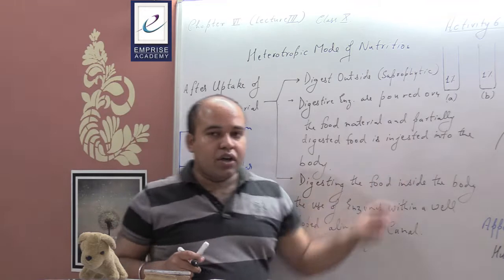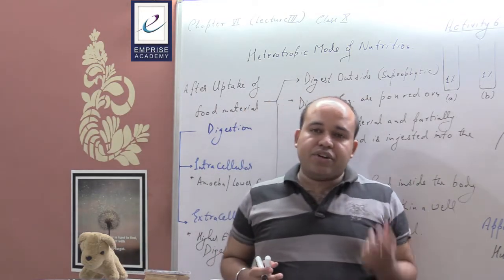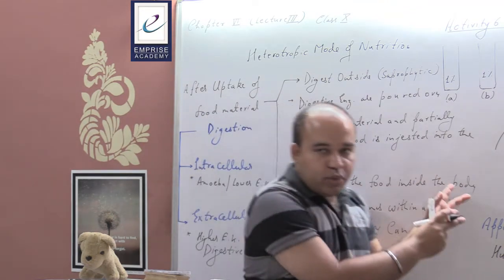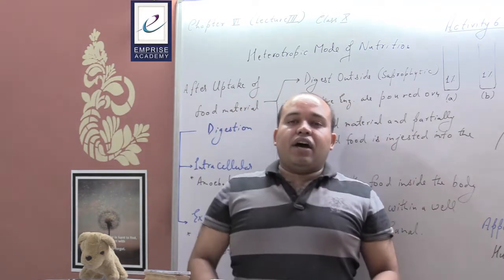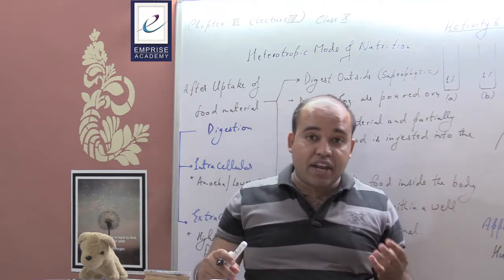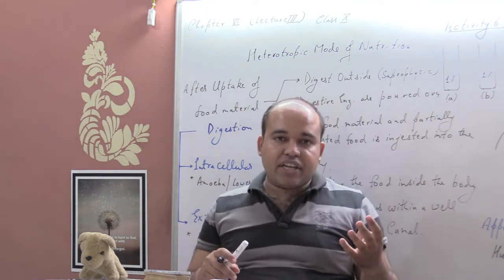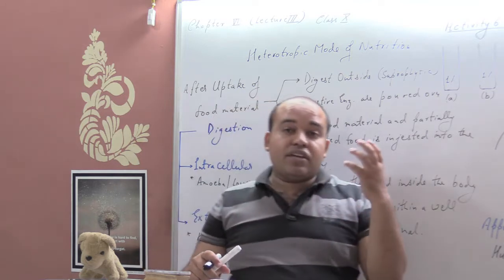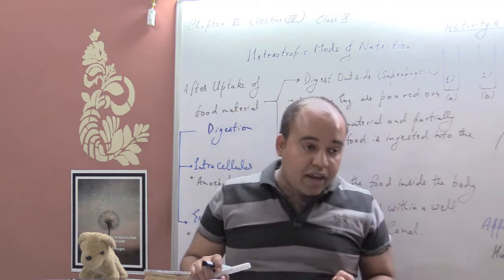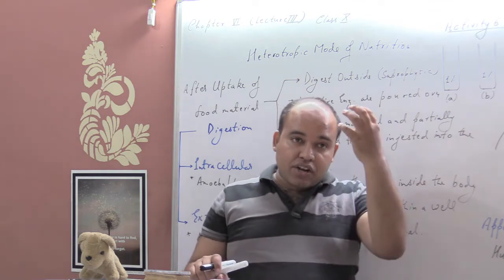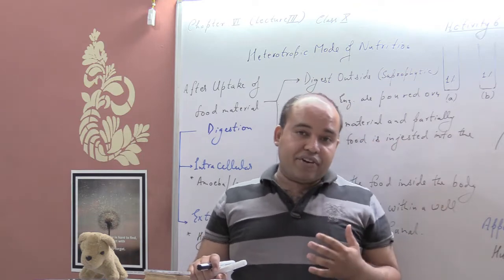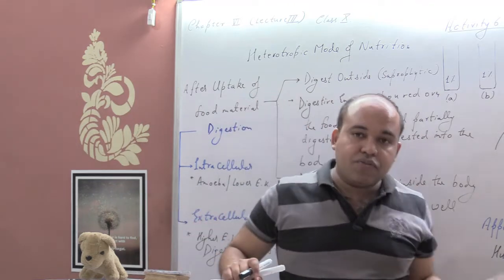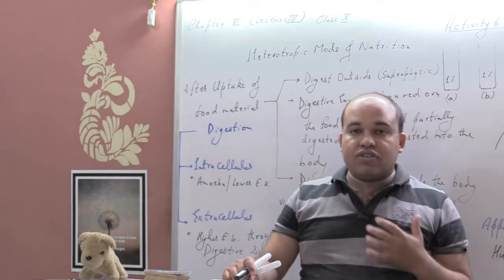We will now talk about how digestion takes place and how nutrition is absorbed in the human body. We will look at the different components of our digestive system which aid in digestion of food material and absorption of nutrients — examining step by step how nutrients are absorbed along the alimentary canal and transferred into the bloodstream.